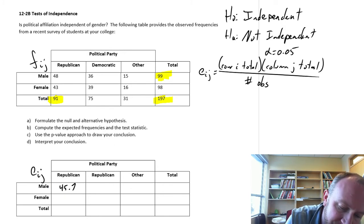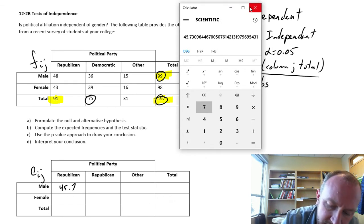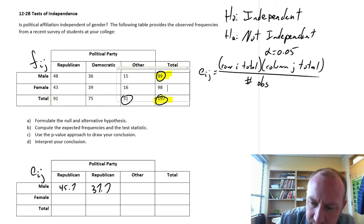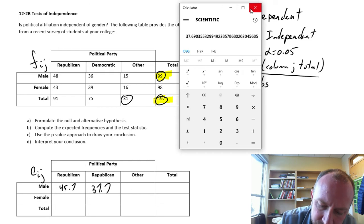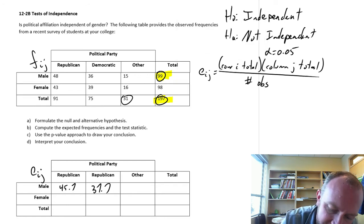The next one would be 75 times 99, always the same denominator, divided by 197. So 37.7. The next one, now we're looking at 31 times 99 divided by 197, which is 15.6.